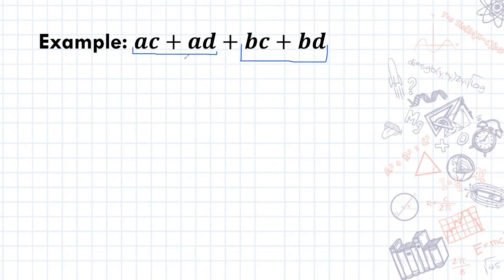Here, what's common is the a, so I'm going to take out an a. What I'm left with is c plus d. It's just like taking out a highest common factor, but only out of part of the set of terms.